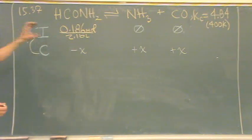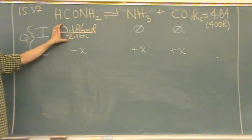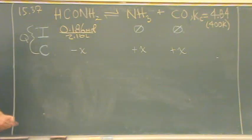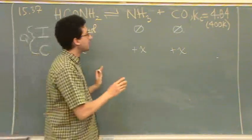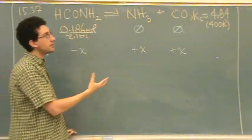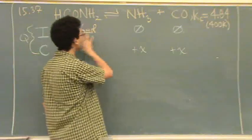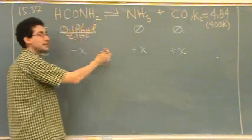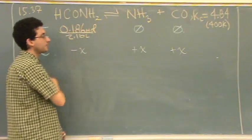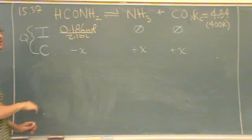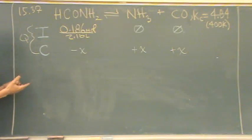Basically in this problem, it says you start with a certain amount, meaning you don't have an end product yet. So that's why the products are zero. Two quick rules: if Q is zero — meaning a zero is on the product side — it must shift to the right. If Q is infinity — meaning there's a zero on the reactant side with numerical values on the product side — it has to shift left to make more reactants. An infinite Q means it's all products.